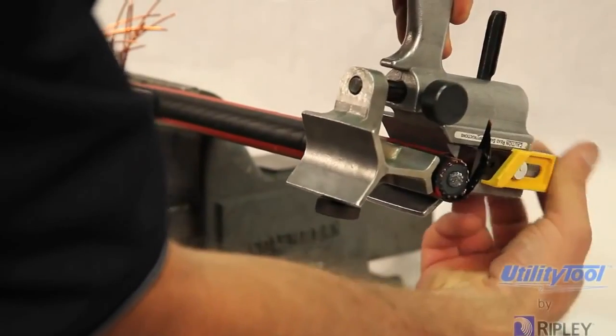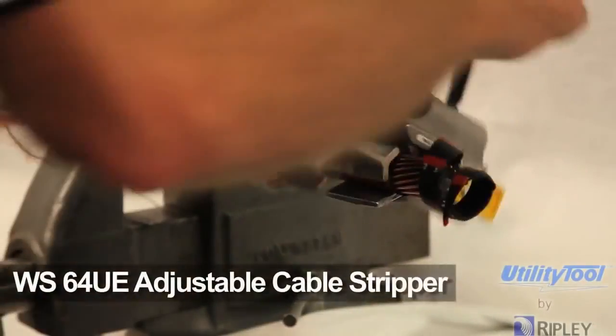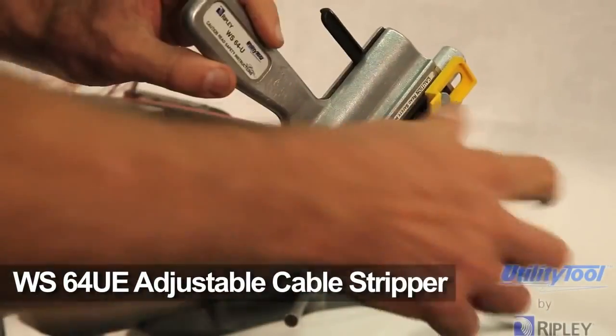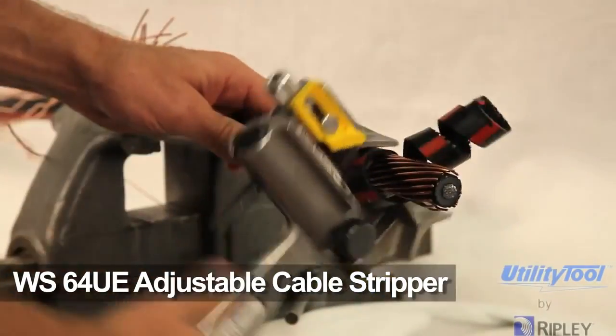Prepare the cable properly to expose the semiconductive layer. Ripley provides a variety of jacket removal tools. The WS64UE will strip the outer jacket while leaving the concentric neutral wires undamaged.